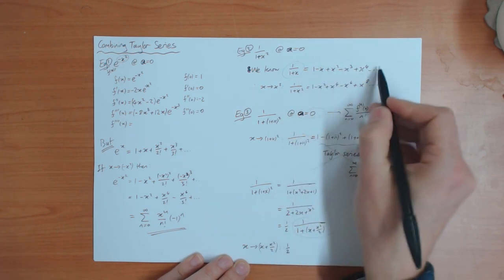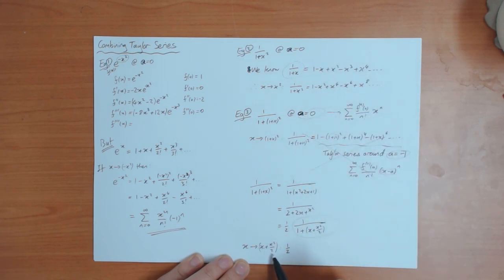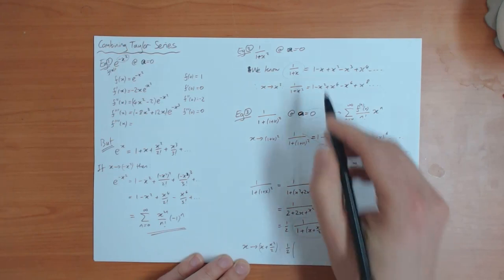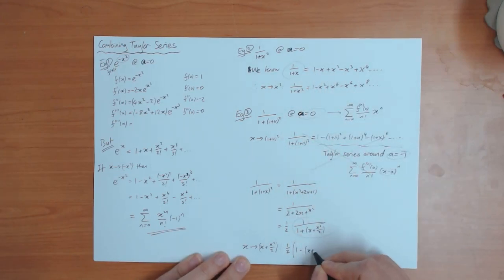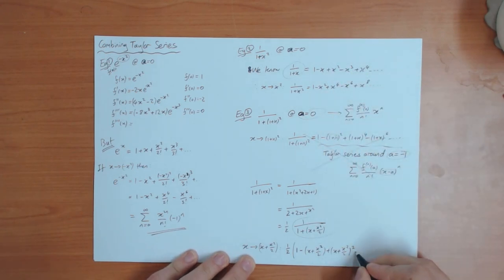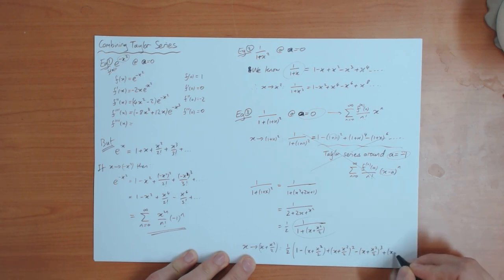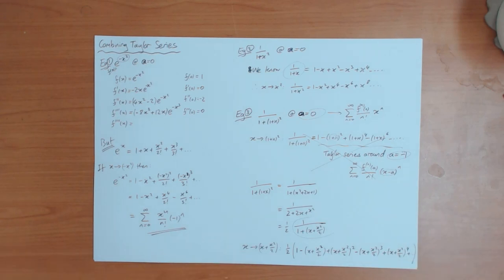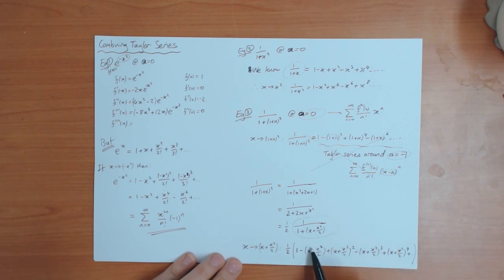If you make the substitution x goes to x plus x squared over 2, then you do get a series that you can expand as a polynomial in x. So I take this Taylor series and substitute x goes to x plus x squared over 2. The factor of a half stays out the front. So you get a half times: 1 minus x plus x squared over 2, plus x plus x squared over 2 squared, minus x plus x squared over 2 cubed, plus x plus x squared over 2 to the power of 4, and so on. This is not quite there yet because we need to expand these to find the total coefficient of x, x squared, and so on.